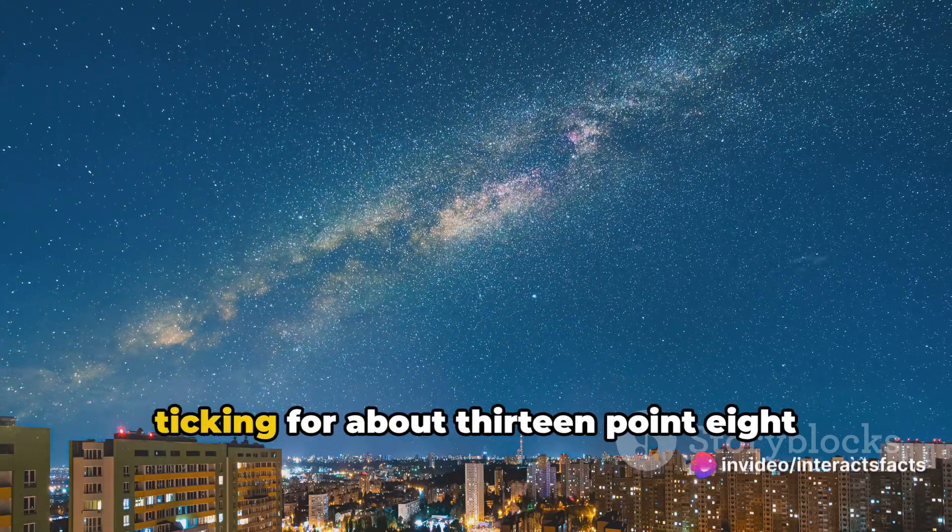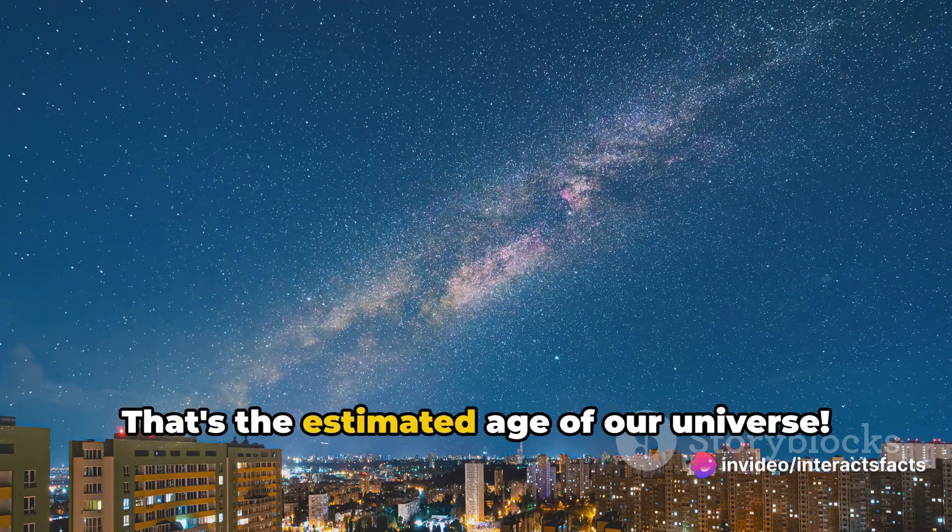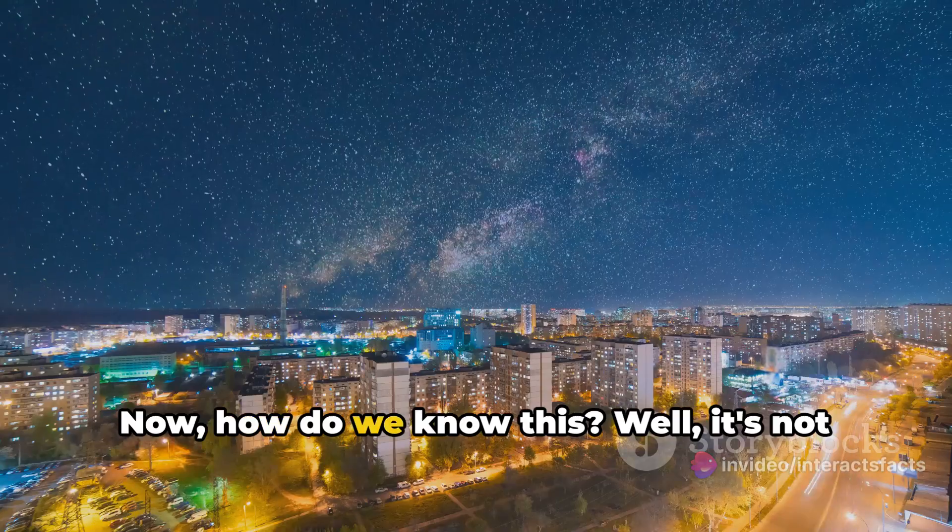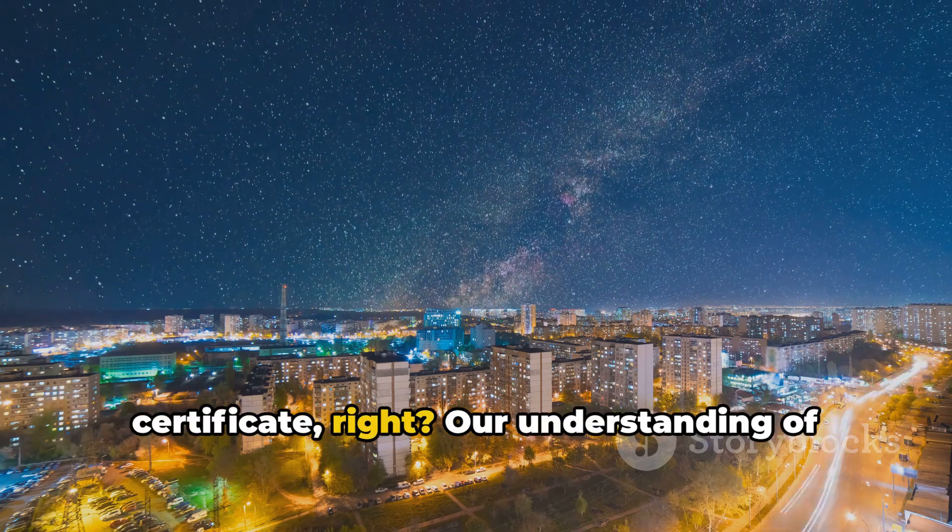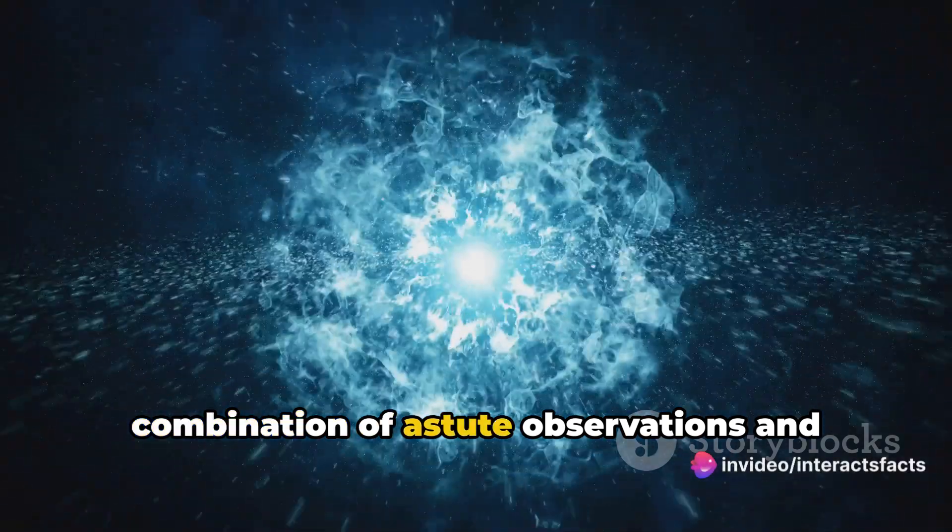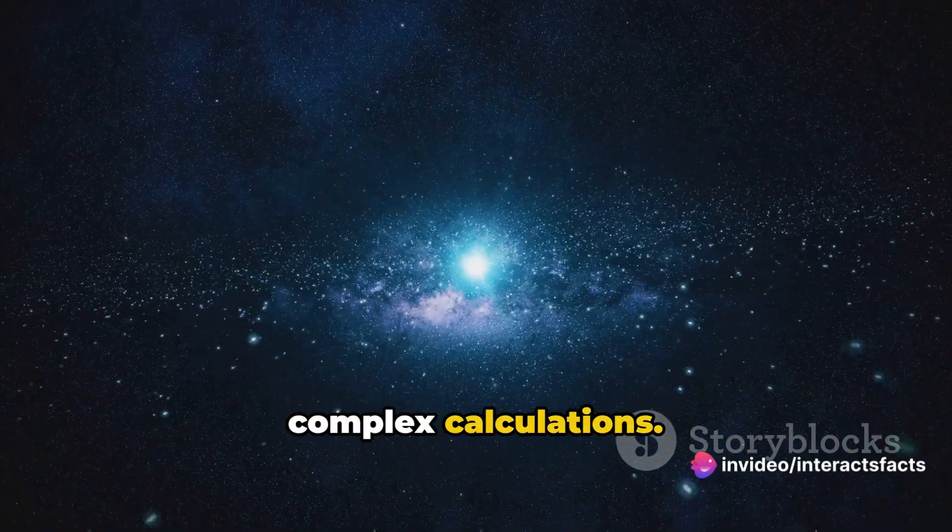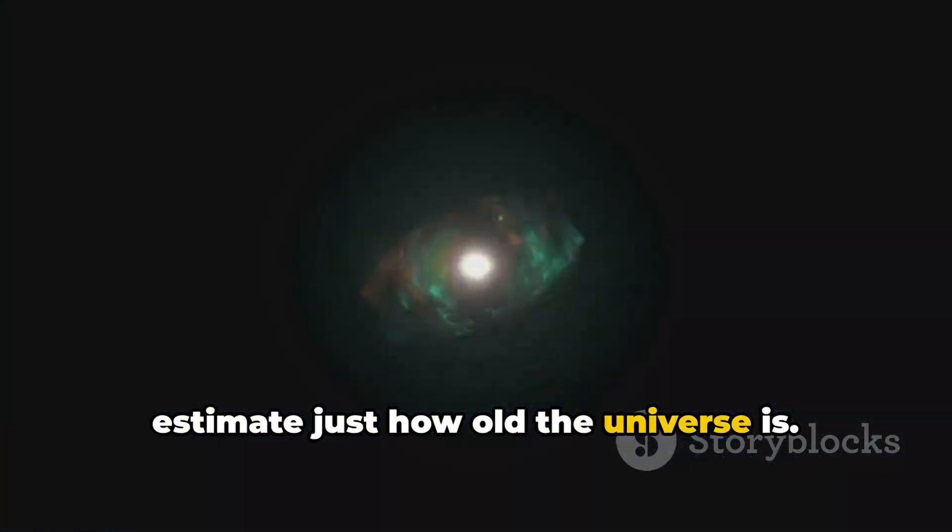Imagine a time clock that has been ticking for about 13.8 billion years. That's the estimated age of our universe. Now, how do we know this? Well, it's not like the universe came with a birth certificate, right? Our understanding of the universe's age comes from a combination of astute observations and complex calculations. Scientists have used several methods to estimate just how old the universe is.